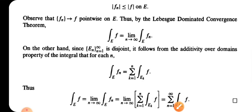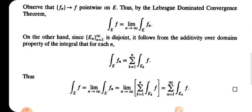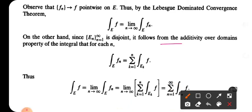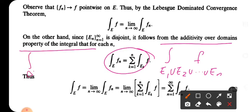On the other hand, since the collection E_n is disjoint, the integral of F_n over E equals the integral over E_1 union E_2 union etc. union E_n of F. We know that for disjoint sets A and B, the integral over A union B of F equals the integral over A of F plus the integral over B of F.